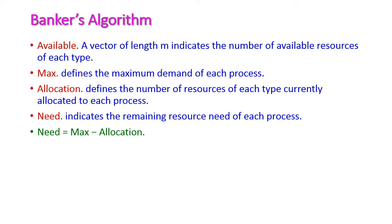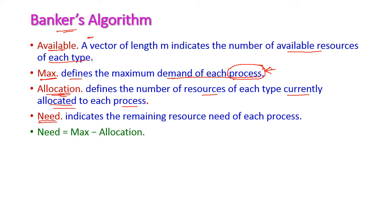The common factors used in Banker's algorithm are: first, Available — the total number of resources available in the system. Second, Maximum — which defines the maximum demand of each process, that is the maximum number of resources required for that particular process. Third, Allocation — the number of resources of each type currently allocated to each process. And fourth, Need — the remaining resources needed for each process to complete its execution.